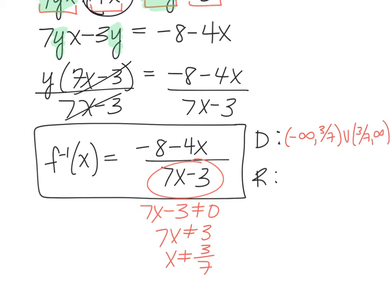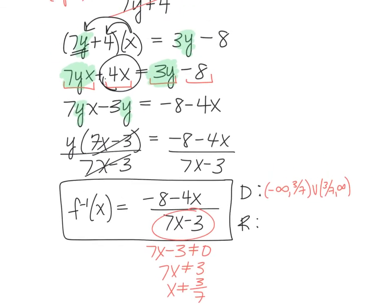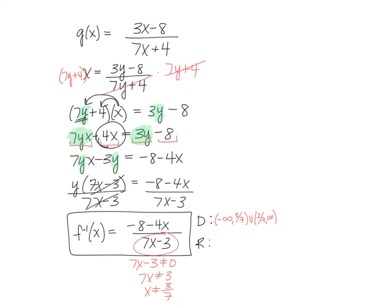However, the range is much harder to figure out for the inverse, and we could spend some time graphing the inverse if we wanted to, but that's going to be time-consuming. So it would be better for us to realize that the range of the inverse is going to be the same as the domain of the original.